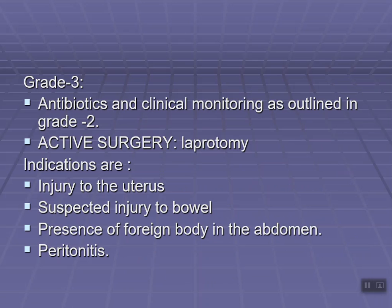For Grade 3, antibiotics and clinical monitoring as outlined for Grade 2 are continued, along with active surgery — laparotomy. Under laparotomy, an incision is made over the abdomen and the products of conception are removed, similar to a caesarean section. Indications for laparotomy include: suspected injury to the uterus, suspected injury to the bowel, presence of a foreign body in the abdomen, and peritonitis.